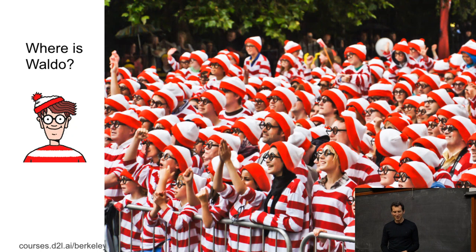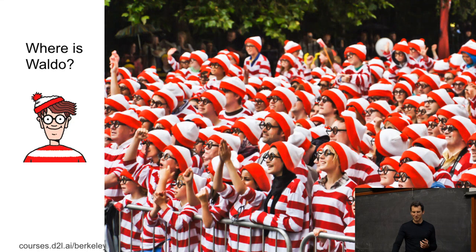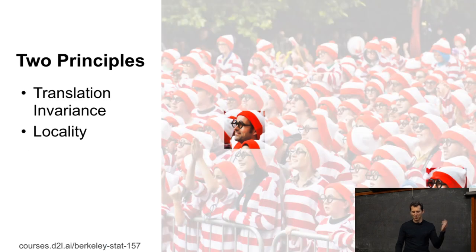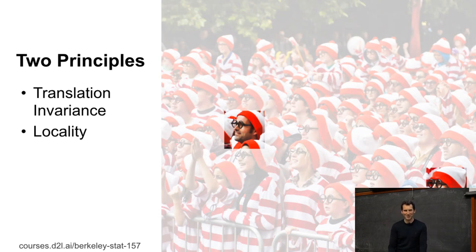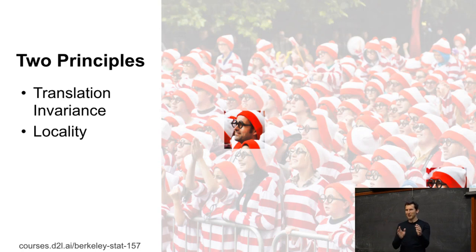What does this have to do with multi-layer perceptrons and computer vision? Actually a lot. If you look at a picture of Waldo, there are a lot of Waldos in that picture, and the Waldo-ness doesn't really depend on where in the picture this person is — it also doesn't depend very much on the neighbors. When you teach kids to play this game, you show them one example of Waldo and they go find him. They're pretty good at using that simple template to scan the entire picture, using the fact that only locally this matters and that Waldo could be anywhere in the image.